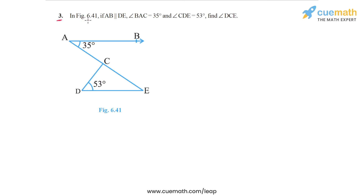Question 3 says: in figure 6.41, if AB is parallel to DE, and angle BAC is equal to 35 degrees, and angle CDE is 53 degrees, find angle DCE.